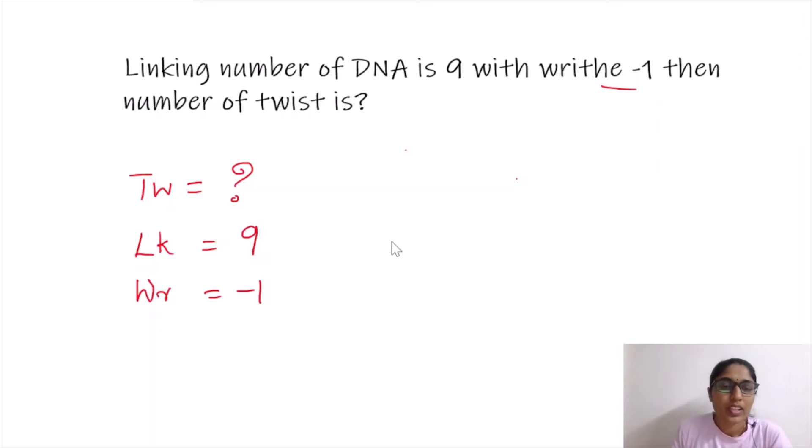So here one equation is the Lk—that means linking number—is equal to writhe plus twist. Okay, here we have to use this equation for calculating number of twist. So here linking number is 9, writhe is -1.